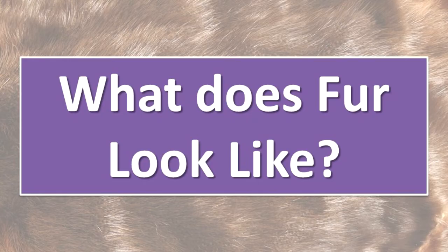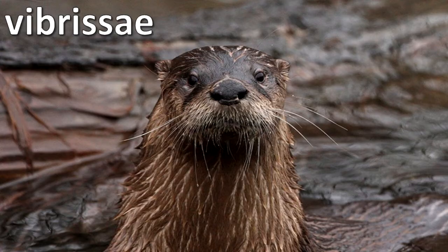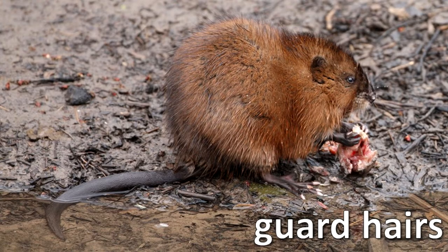What does fur look like? There are different types of hairs. Vibrissae, such as whiskers, are used for sensing the environment. Guard hairs serve as protection and keep moisture away. Underhairs or downhairs provide insulation. Awnhairs are shorter than guard hairs and longer than downhairs.